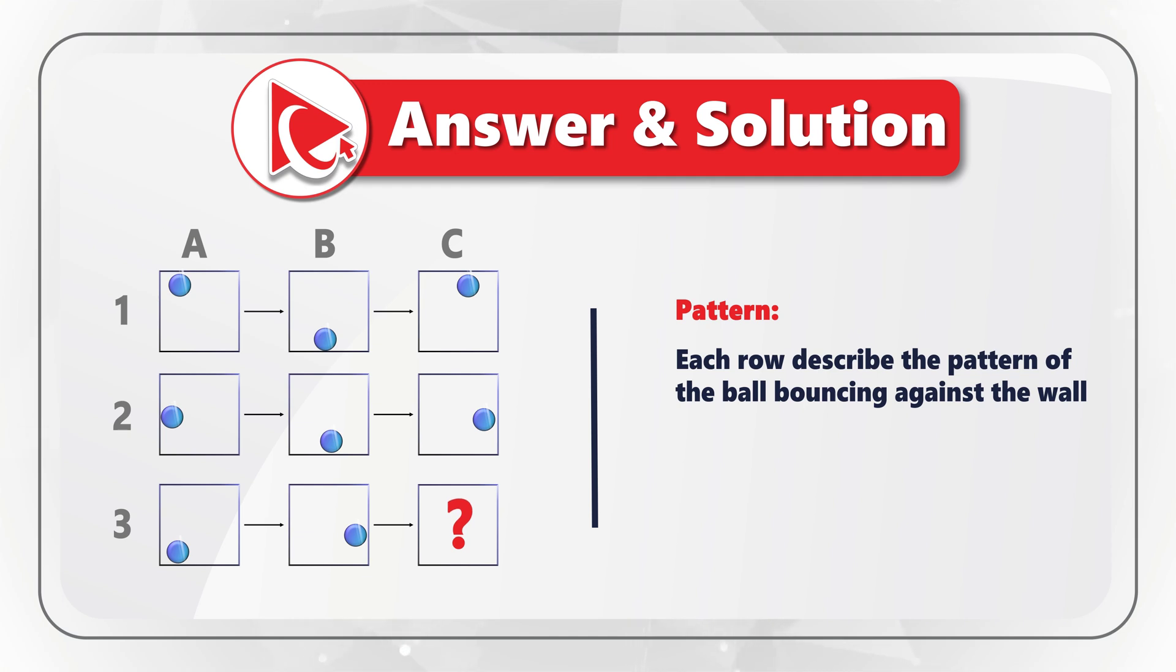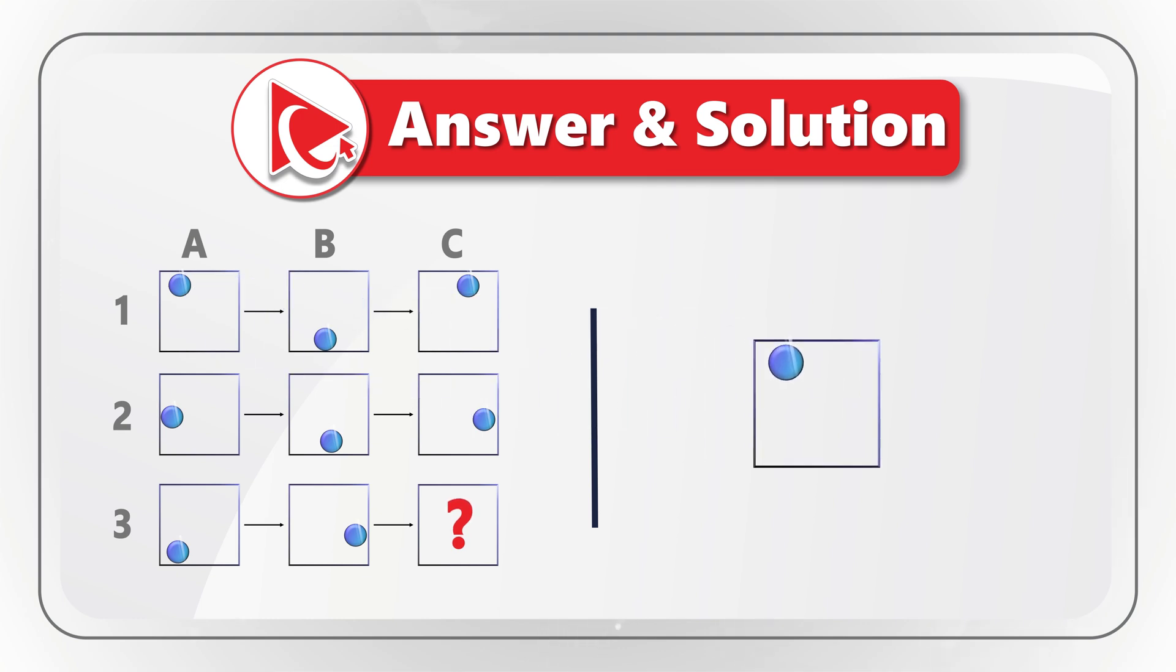As you might have guessed, each row describes the pattern of ball bouncing against the wall. Let's start by looking at the object A1. This is where the ball in the upper left corner moves downwards toward the middle of the bottom section. And this is where exactly we see the ball in the object B1.